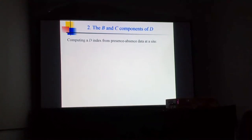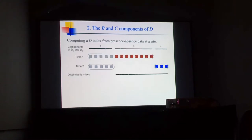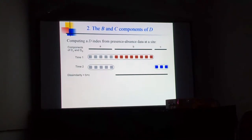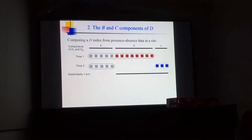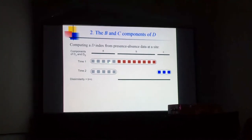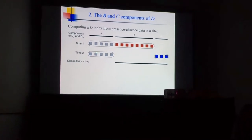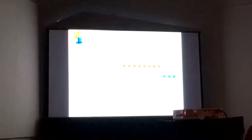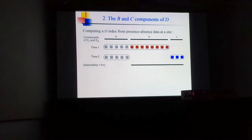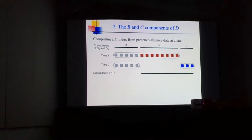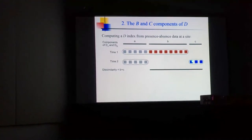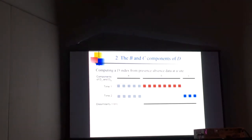I will show how we can compute an index from presence-absence data at a site. This schematic summarizes the comparison of the survey at time one and time two for a site. At the two times we have five species in common—the squares represent species. This is the similarity portion, and in the equations for dissimilarity indices for presence-absence data, this portion is called A. B is the number of species that were present at time one but have been lost. C is the number of species that have been gained between time one and time two. These two parts, B plus C, is combined in dissimilarity indices to form the numerator of the dissimilarity.